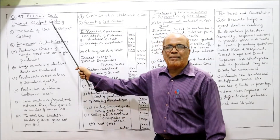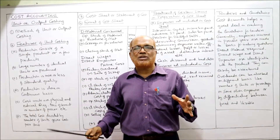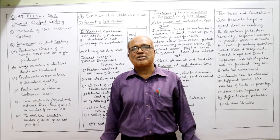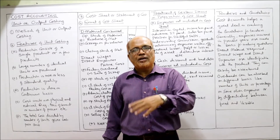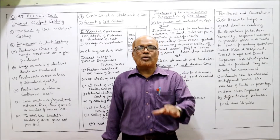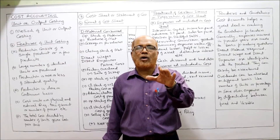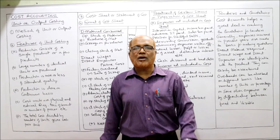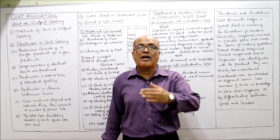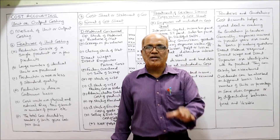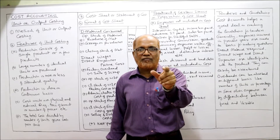First, I'll explain the meaning and method of unit or output costing. There are different methods of costing applied in different organizations — job costing, contract costing, process costing. Unit or output costing is a system of cost accounting applied to determine the cost per unit of a single product manufactured on a continuous basis.